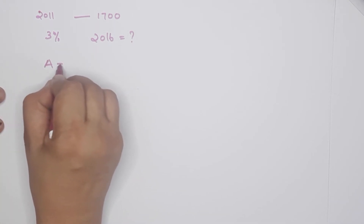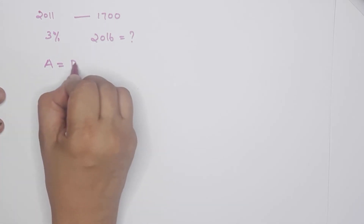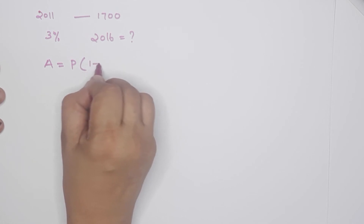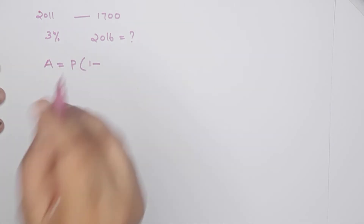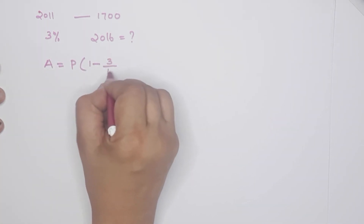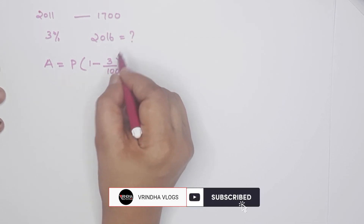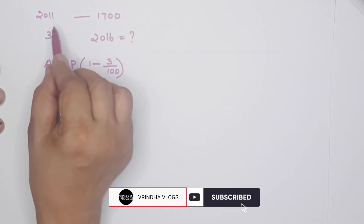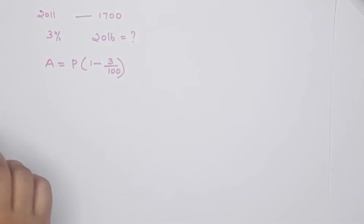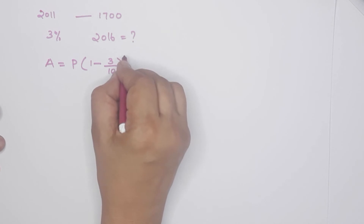The formula is A equals P into 1 minus R by 100, whole raise to N. P is the starting value, 1,700. R is 3. From 2011 to 2016: 12, 13, 14, 15, 16 — that is N equals 5.